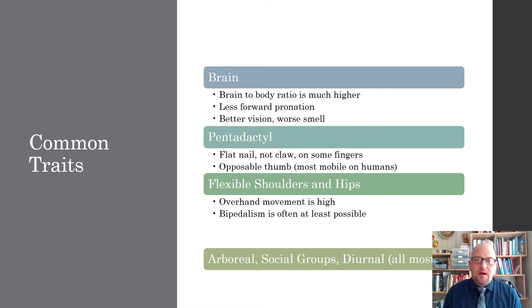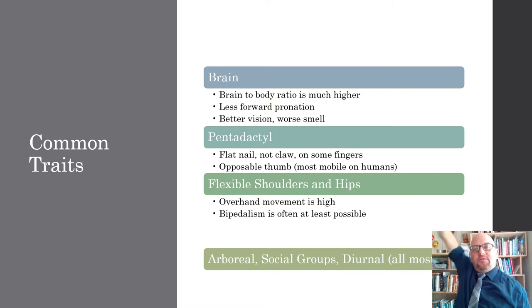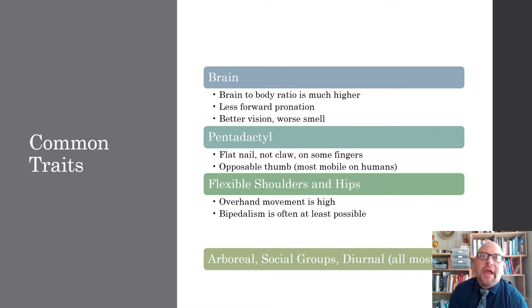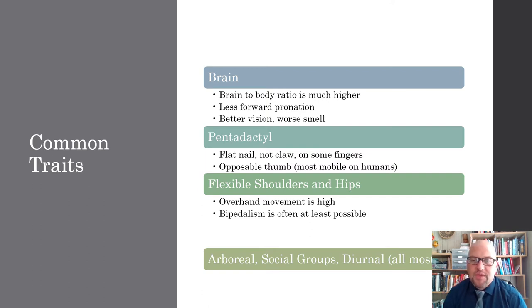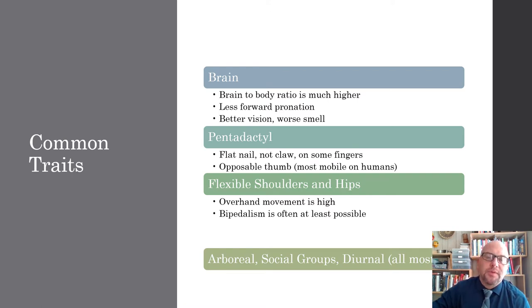Another common thing, at least for humans, is that we have an incredible amount of flexibility in our shoulders and hips. Overhand movement is very high — we can rotate our arms back significantly. Our hips are really flexible as well. This often means that at least in the apes and almost all the monkeys, bipedalism is often at least possible. It's pretty rare for a primate to have no bipedalism whatsoever. Most primates are arboreal — we clearly are not. We are terrestrial animals. Arboreal means you live in trees; terrestrial means you live on the ground. We are a terrestrial primate, but that's actually kind of rare.